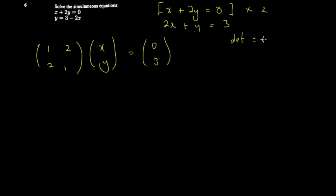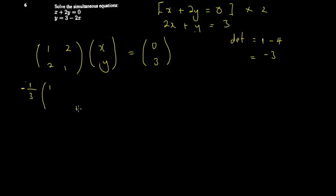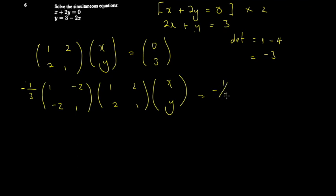You need to find the determinant: one times one minus two times two gives one minus four equals negative three. The inverse is one over the determinant, so one over negative three equals negative one third. For the inverse matrix, you swap the diagonal elements — ones stay as ones — and negate the off-diagonal elements, giving negative two and negative two. You pre-multiply both sides by this inverse matrix.